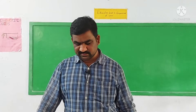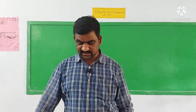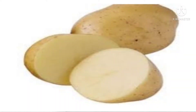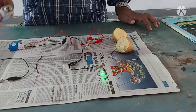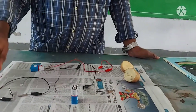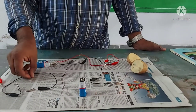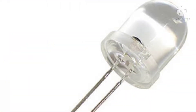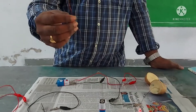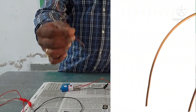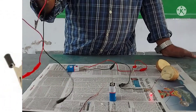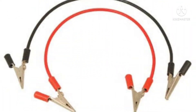To conduct this activity, we need some materials. They are a big size potato, a 9 volt battery, one LED (light emitting diode), two copper wires with insulation layer, and other connectors such as crocodile clips.